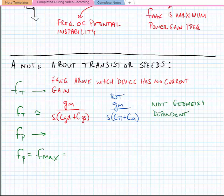Okay, we noted that this isn't geometry dependent, and the reason is that the way that we increase GM is to increase the width of the device. For instance, and if we increase the width of the device, the capacitances are going to increase proportionally to GM. And so to a first order, as I increase the width of the device, FT doesn't change.